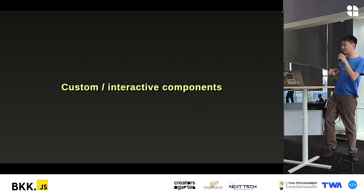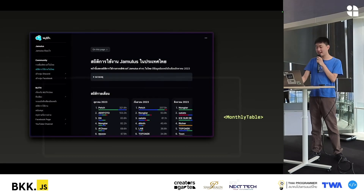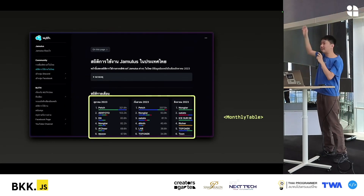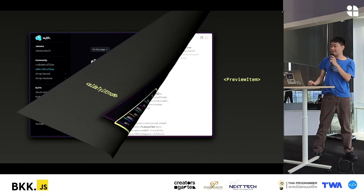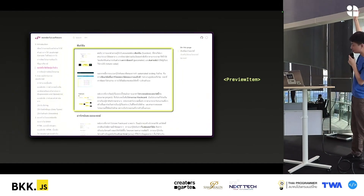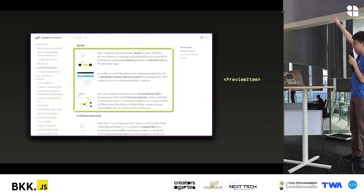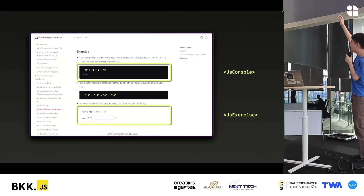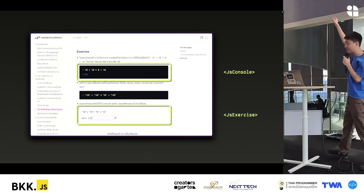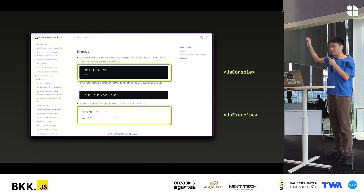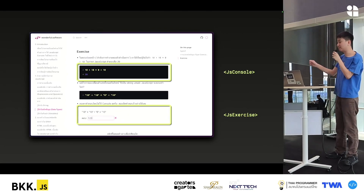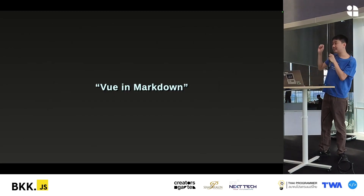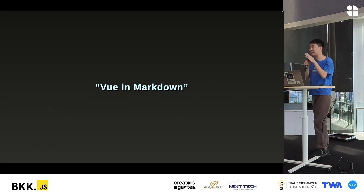The next customization approach is through custom components or interactive components. For example, the mjth.live website has a component that shows a specific style. Or in the wonderful.software website, there is a banner that shows images on alternating sides. Or there is a banner that uses a JavaScript console with input and output — when you write text, it renders on the page. For these, I use a feature called Vue in Markdown, which is a core feature of VitePress.